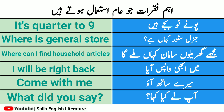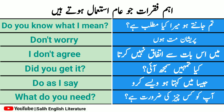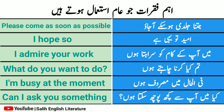Mere saath aa — come with me. Aapne kya kaha — what did you say? Tum jaante ho mere kya matlab hai — do you know what I mean? Pareshan mat ho — don't worry. Main is baat se ittifaq nahi karta — I don't agree. Kya tumhe samajh aayi — did you get it? Jaisa main kehta hoon waise karo — do as I say. Aapko kis cheez ki zaroorat hai — what do you need? Umeed to yahi hai — I hope so. Main aapke kaam ko sarahta hoon — I admire your work.